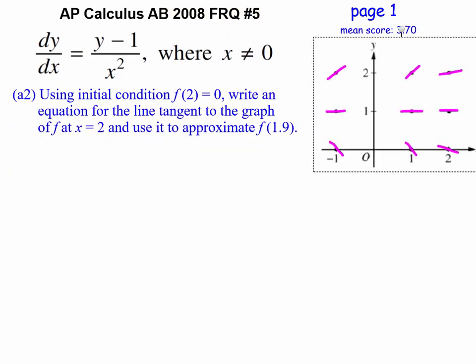So what we're being asked to do here is to use the initial condition f of 2 equals 0, write an equation for the tangent line to that graph at the point where x equals 2, and then use it to approximate f of 1.9. Let's go ahead and just do that task and then talk a little bit about what did we just accomplish with it.